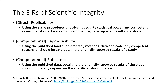Third, robustness: research is robust when, using the published data, obtaining the originally reported results of the study does not overly depend on the specific analysis pipeline. Note that all of these terms are sometimes used differently in different contexts, so take the definitions with a grain of salt. More important than the terminology, however, are the specified goals of open science. So how can we practically achieve them? Let's talk about some best practices.